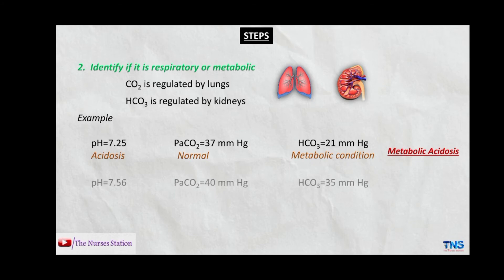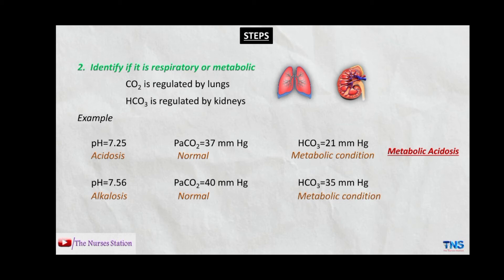Last example for step two: pH 7.56, PaCO2 40, and HCO3 35. The pH is more than normal so the patient is having alkalosis. PaCO2 is within the normal range of 35 to 45, so no respiratory condition. HCO3 is 35, which is above the normal range of 22 to 26, indicating a metabolic condition. So the patient is having metabolic alkalosis.